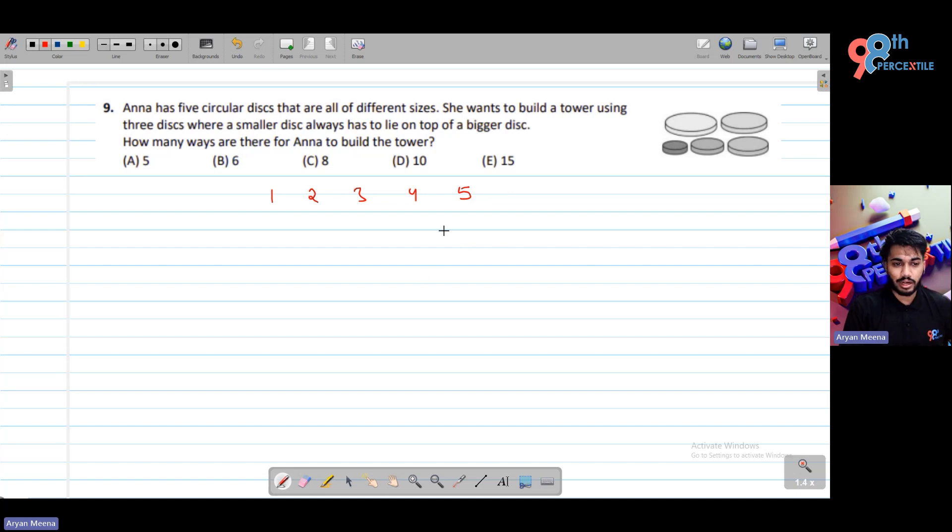If I want to make a tower of three disks, the base can either be 5, 4, or 3. The base can never be 2, because on top of 2 we will have to put just 1 and nothing else will be there. We need 3 disks.